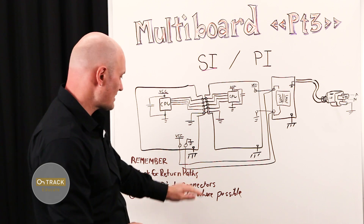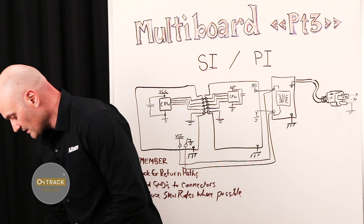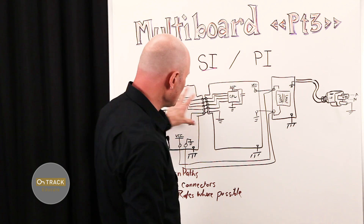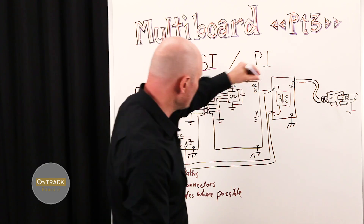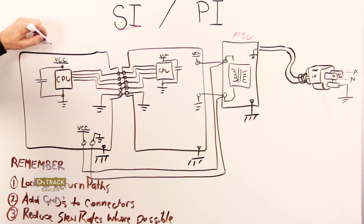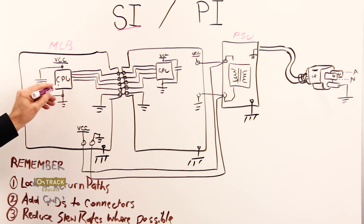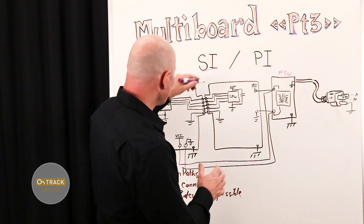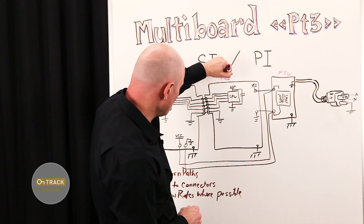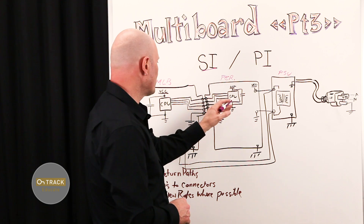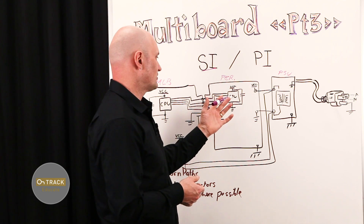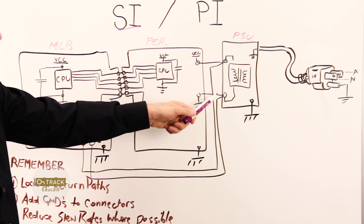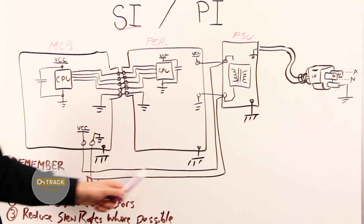By way of example, I have a typical scenario illustrated here. We have a power supply unit, or PSU, over here. I have a main logic board, or MLB, and on that main logic board I have a CPU, which is our central driving device for controlling everything. And just for argument's sake, I have a peripheral board — let's call it PER for short — and on the peripheral board I have another device, for example a graphical processing unit or GPU. These boards are fed by the same power supply.